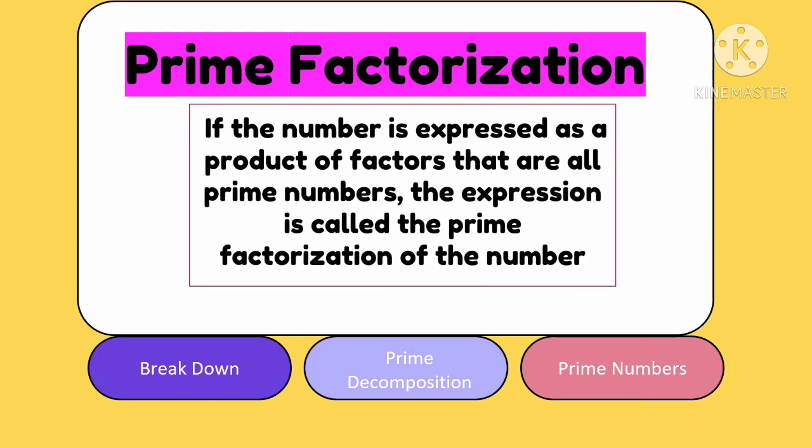If the number is expressed as a product of factors that are all prime numbers, the expression is called the prime factorization of the number. Again, what is prime number? A prime number is a number where the factors are only two: one and itself.